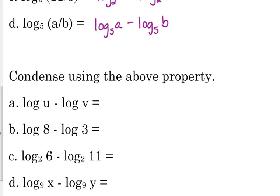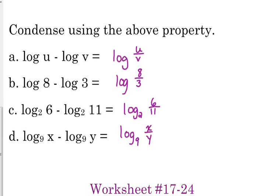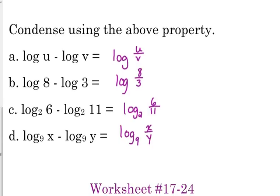So, if we're going to condense, the log of u minus the log of v, that is simply the log of u over v, the log of 8 minus the log of 3, the log of 8 divided by 3, log base 2 of 6 minus log base 2 of 11, log base 2 of 6 over 11, and log base 9 of x minus log base 9 of y, log base 9 of x over y. Again, I'm just trying to illustrate to you, you can use any log, any log base. I know we haven't had any natural logs in these, but it also applies to the natural log as well.